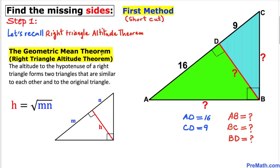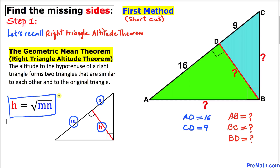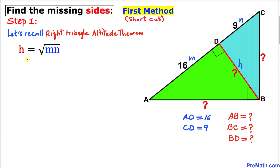Here is the right triangle altitude theorem. We have a right triangle with this altitude drawn. If this line segment is m, this line segment is n, and the altitude (height) is h, then h equals the square root of m times n. Let me label our segments m, n, and height h, and fill in the formula.